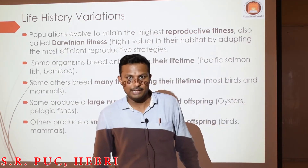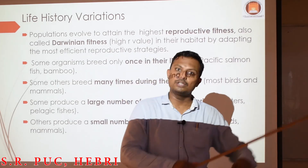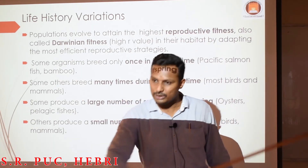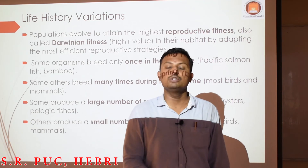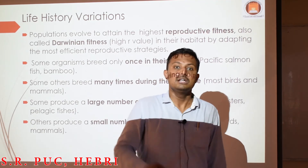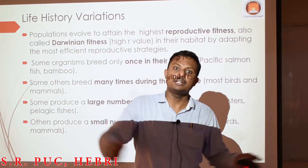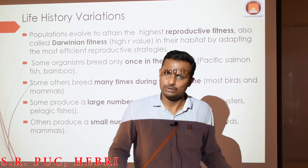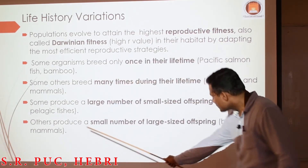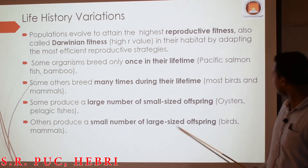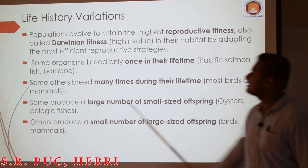Others may produce a small number of organisms but large in size — like the elephant. You have not seen elephants producing many offspring at once; only one is produced at a time. That is a small number but large-sized offspring — seen in some birds as well as some mammals.